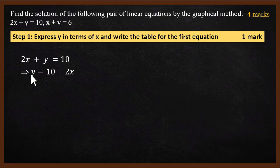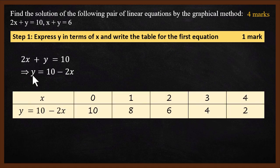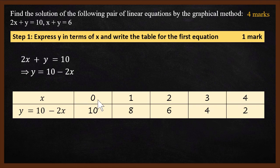We can find the value of y once we know the value of x, so the table comes in. For different values of x — we have taken 0 to 4 — we find the value of y. So x values are 0, 1, 2, 3, 4 and the corresponding y values continue from there. That is the table.